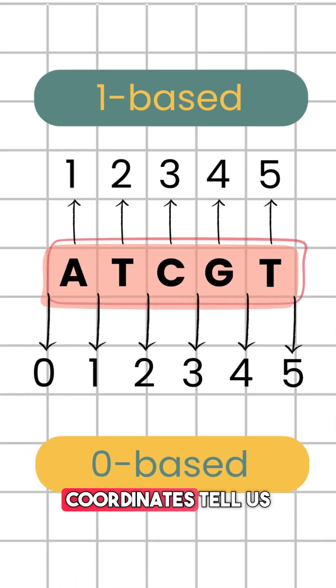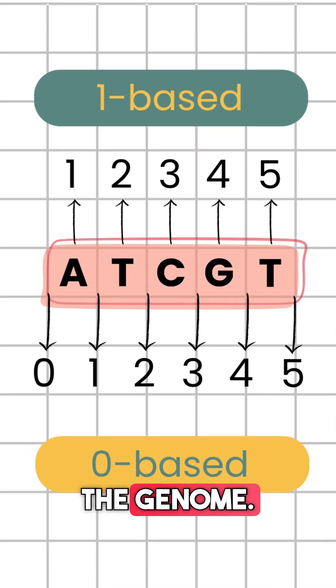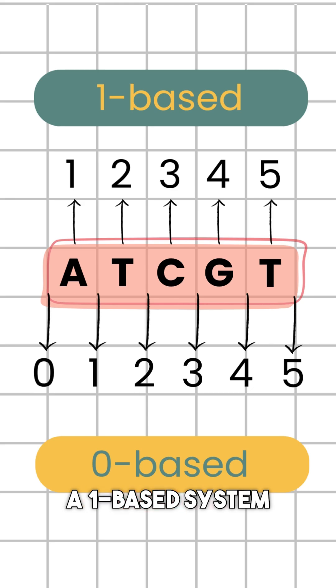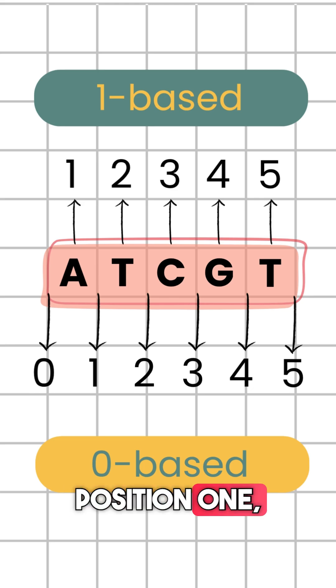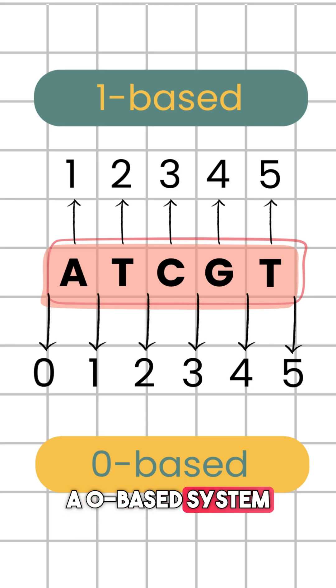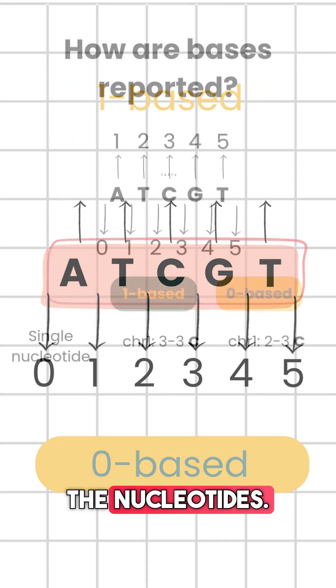In bioinformatics, coordinates tell us where something sits on the genome. A one-based system counts from 1, while a zero-based system numbers between the nucleotides.